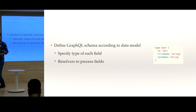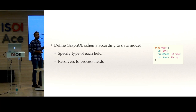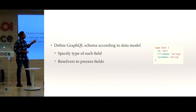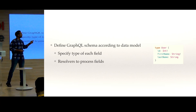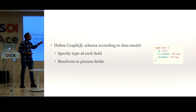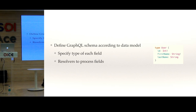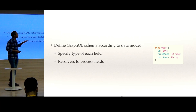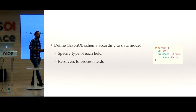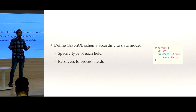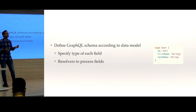For example, we have a type for User with an id of type Int, a first name of type String, and a last name of type String. The exclamation mark means required — every user should have an id and first name, but the last name is optional. In GraphQL, for the entire data model of our application, we define these types and the relationships between them.